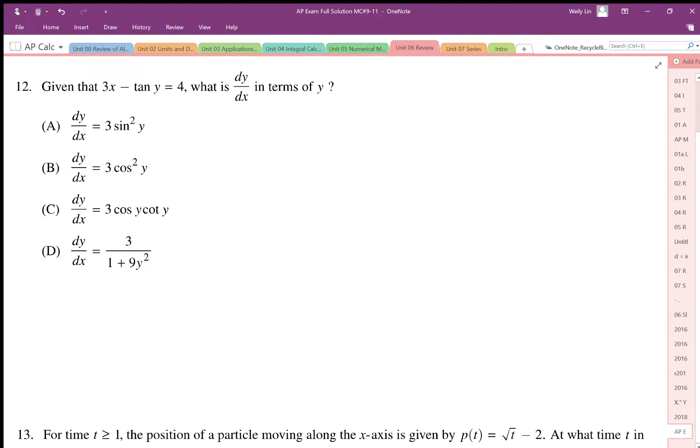Given the implicit function 3x minus tan y equals 4, we're asked to find dy by dx. We have to differentiate this implicitly and generate the y prime value, which is our dy by dx.